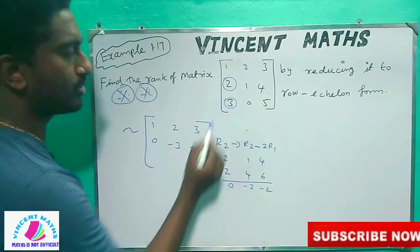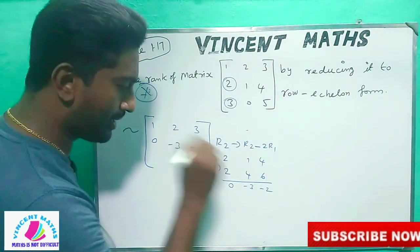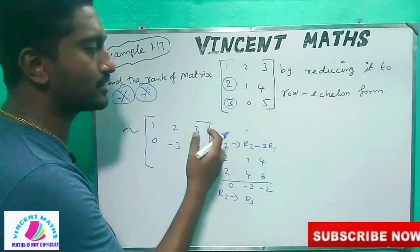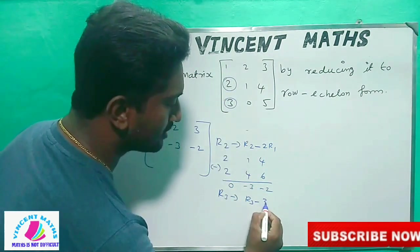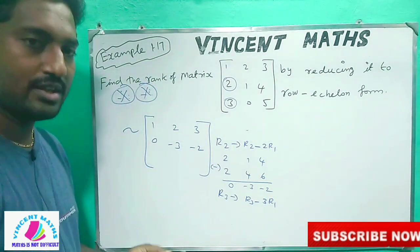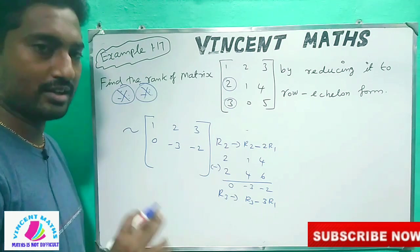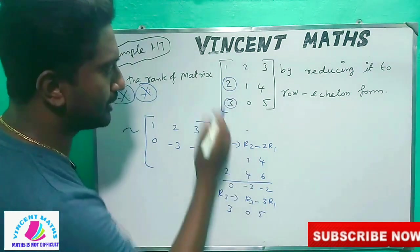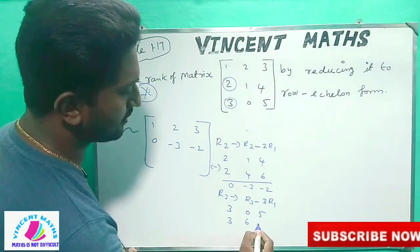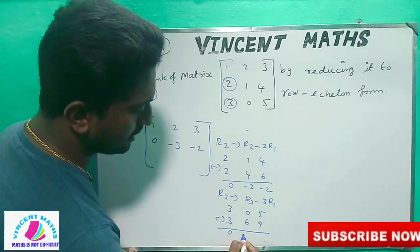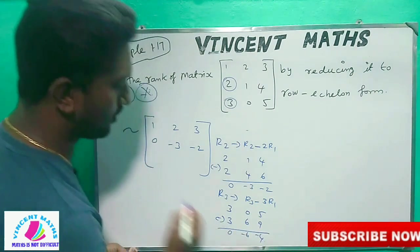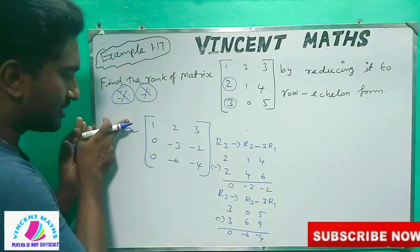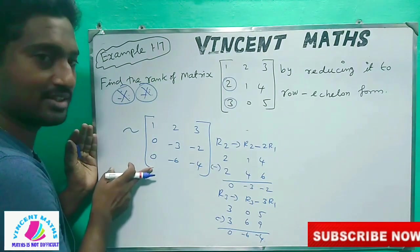Here is 0, then you have 0 in this place, then you have 0 in this place. Now we can talk about R3. Minus 3 R1. We can talk about R3: 3, 0, 5. Then R1: 3, 6, 9. Minus — this is minus, minus this is minus. Then this is what we can do friends — another step.